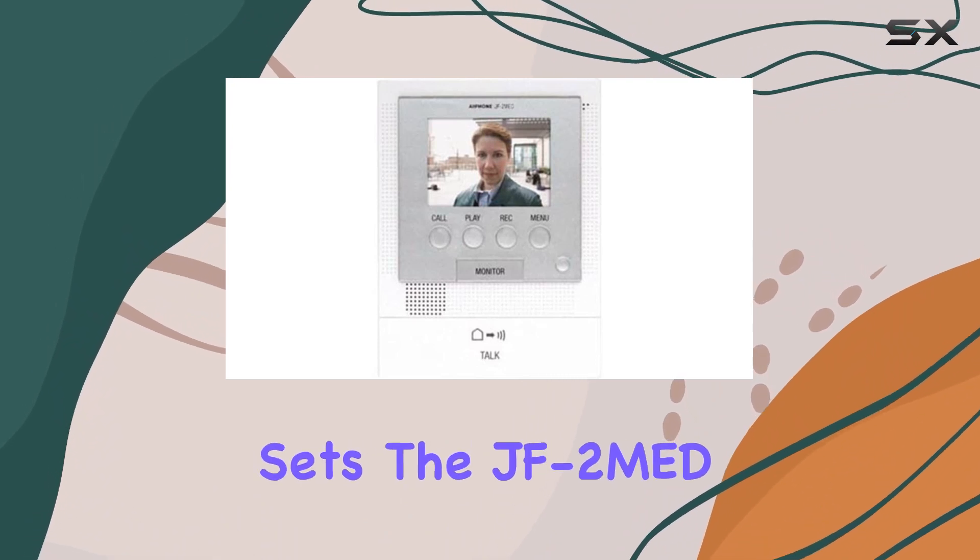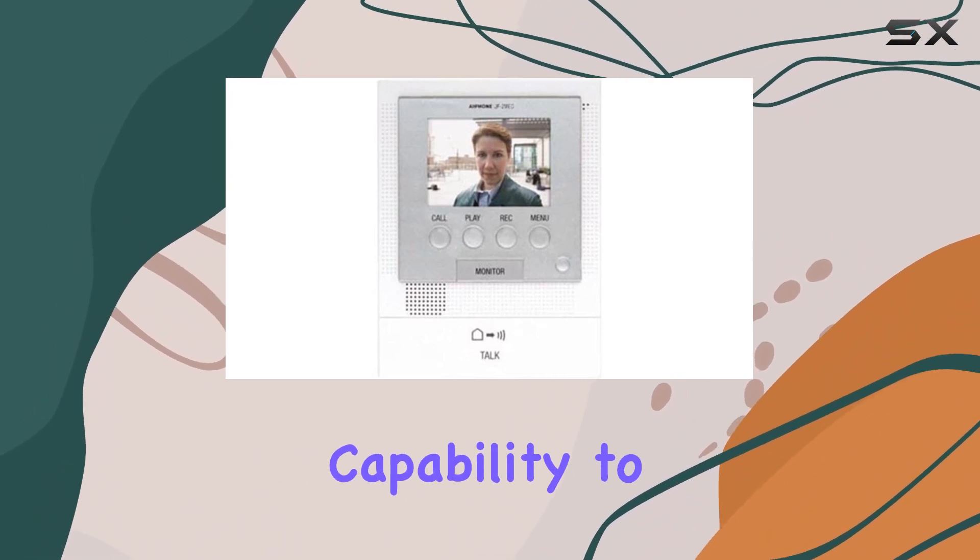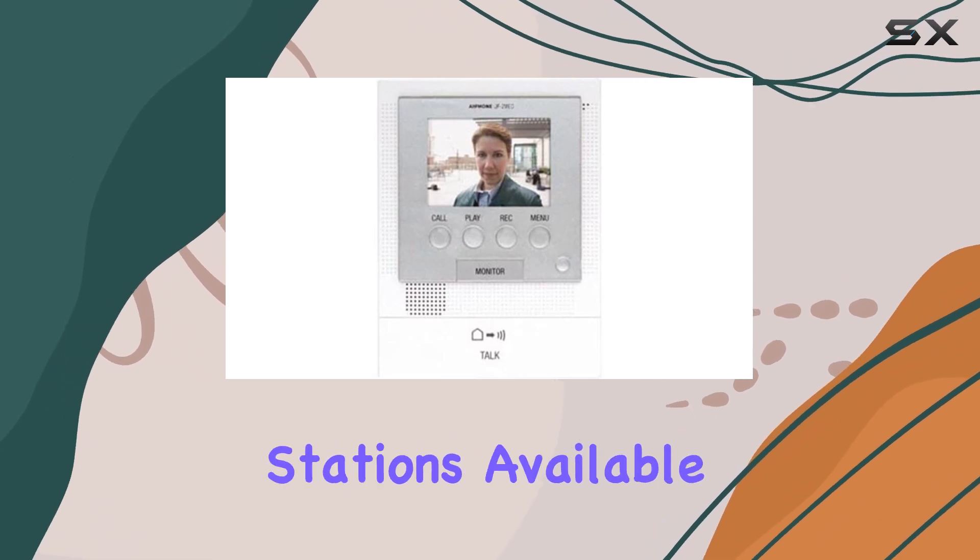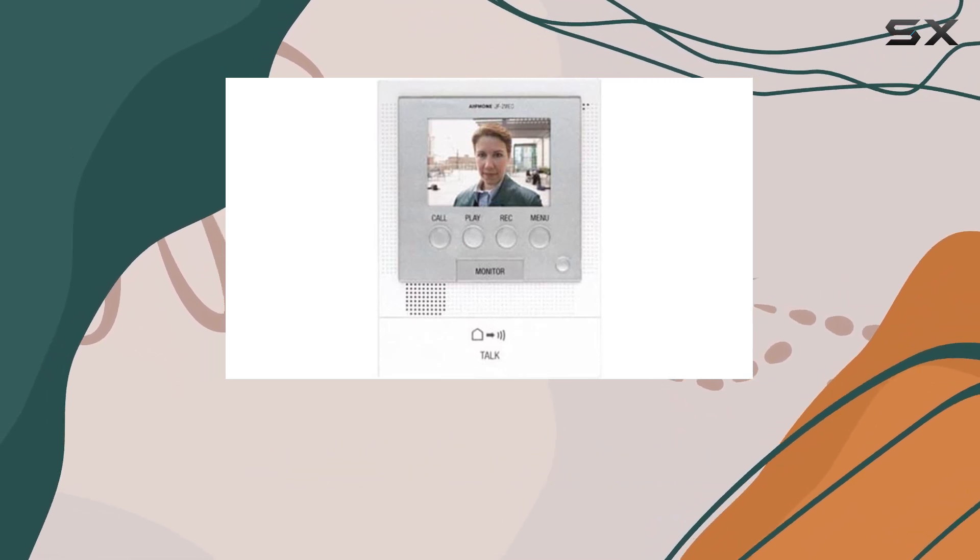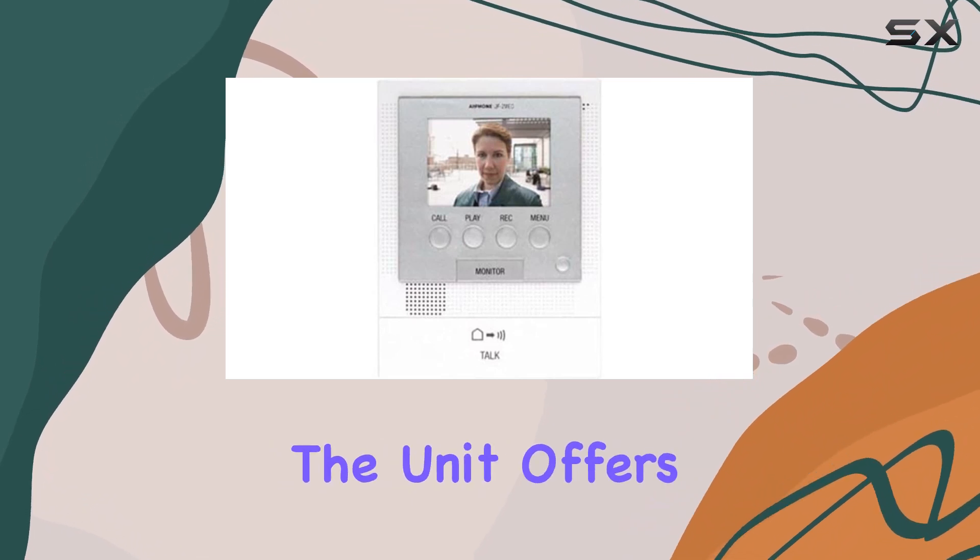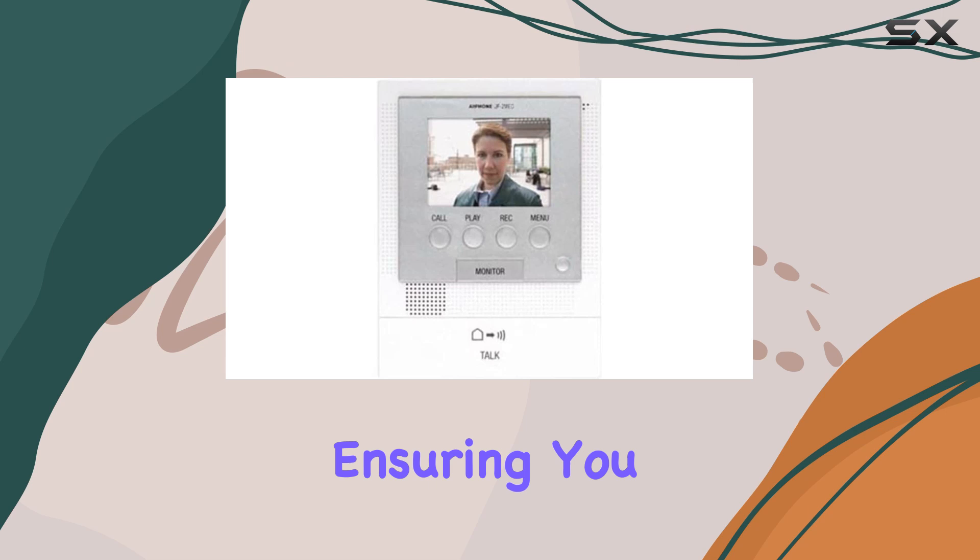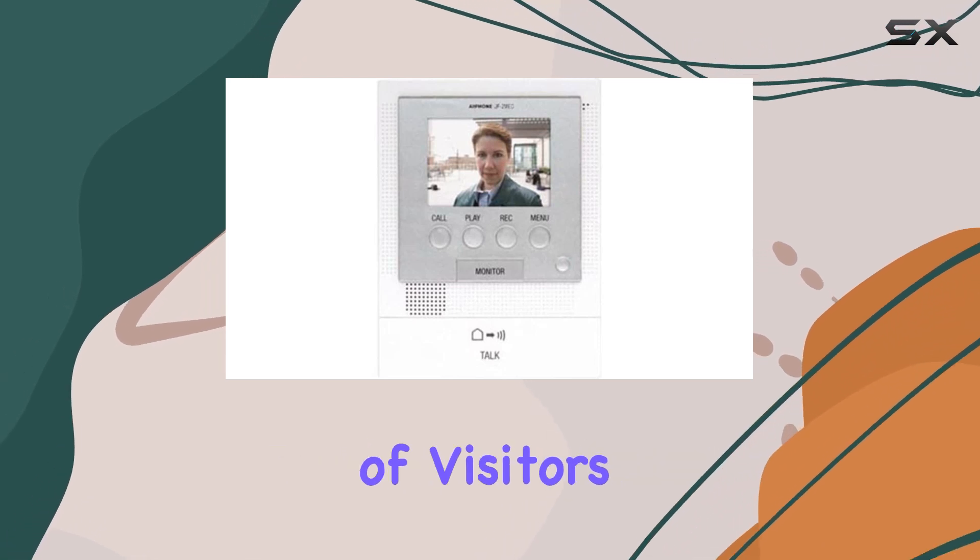What sets the JF 2MED apart is its capability to connect with up to two door stations and two submaster stations (available separately), allowing comprehensive coverage of your property. The unit offers automated image recording upon call initiation, ensuring you capture snapshots of visitors automatically.